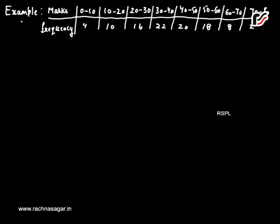A data of marks is given having class intervals from 0 to 10, 10 to 20, 20 to 30, 30 to 40, 40 to 50, 50 to 60, 60 to 70, and 70 to 80. The frequencies for these classes are 4, 10, 16, 22, 20, 18, 8, and 2 respectively. We have to draw two ogives.